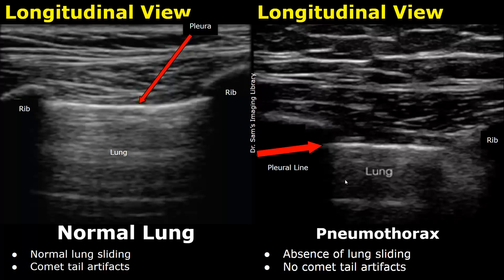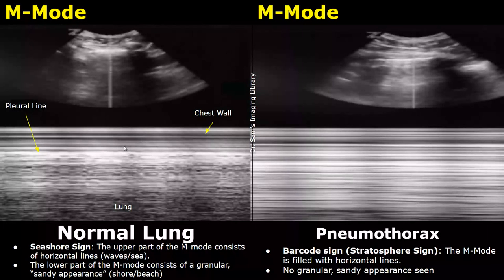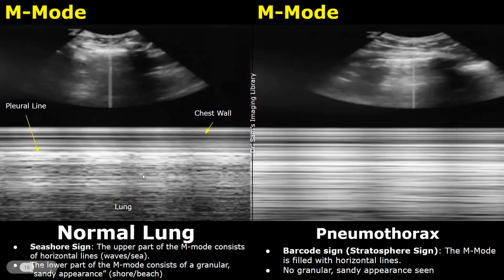This can be further assessed on M-mode. In a normal lung, after M-mode is applied, a seashore sign is seen. In the M-mode tracing, the upper part is the chest wall where horizontal lines are seen, and the lower half is the lung tissue, which consists of a granular, sandy appearance.